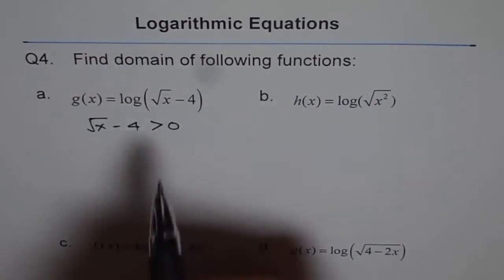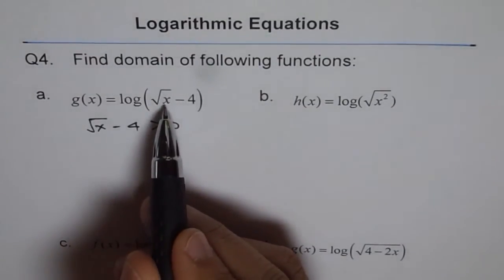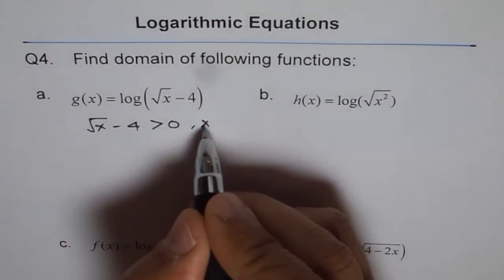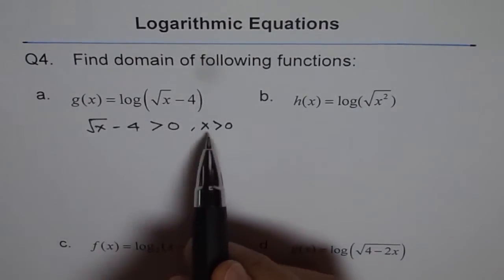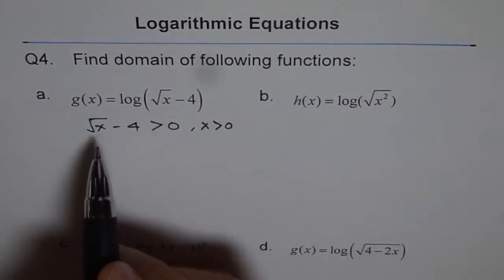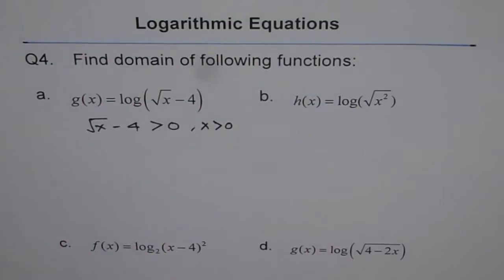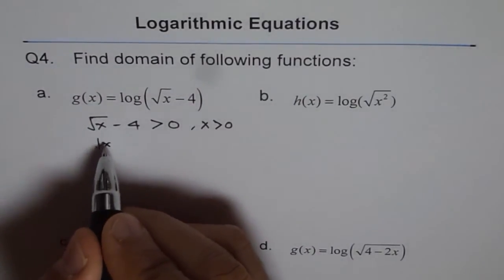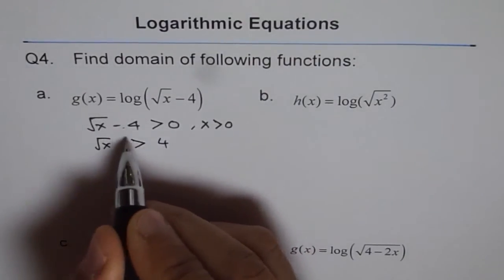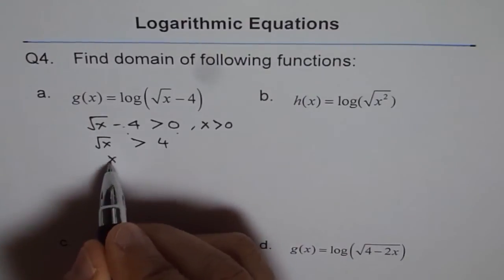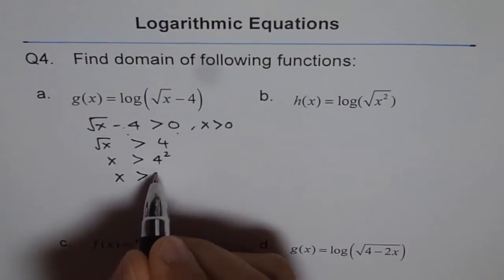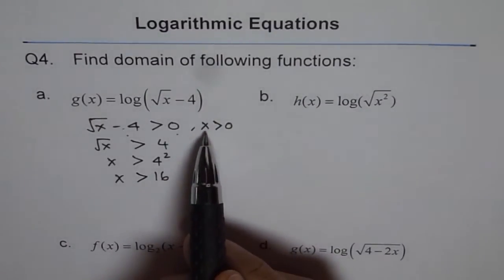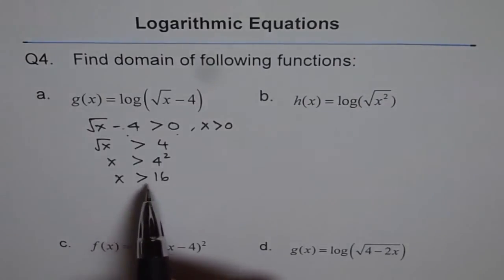Square root of x is permitted only for x greater than or equal to 0, so we know x has to be greater than 0; otherwise square root of x is not permitted. That is one restriction already. Now we solve: square root of x minus 4 greater than 0 gives us square root of x greater than 4. Adding 4 to both sides and squaring, we get x greater than 16.